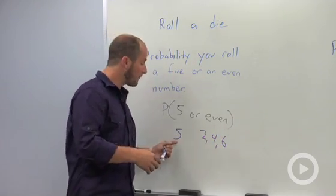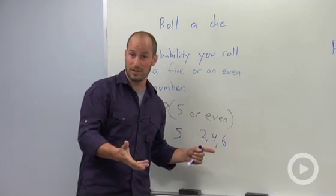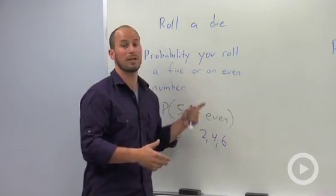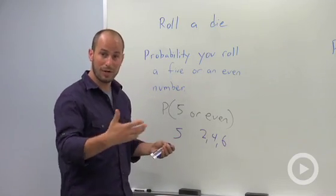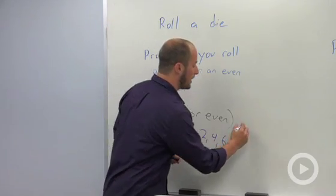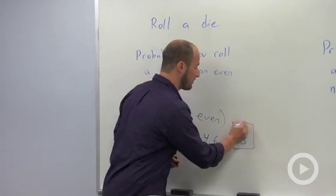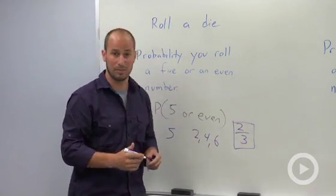So we have four numbers that we're concerned with that are going to fit this mold out of six potential sides to our dice. So basically we have four numbers that work over six, and we end up with a two out of three probability we get either a five or an even number.